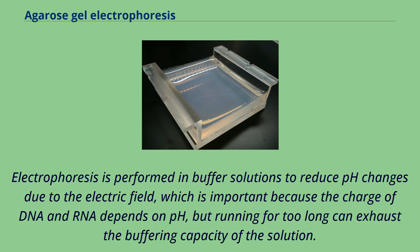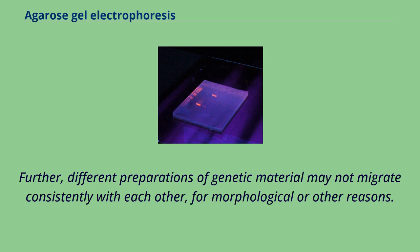Furthermore, different preparations of genetic material may not migrate consistently with each other for morphological or other reasons. In the mid to late 1960s, agarose and related gels were first found to be effective matrices for DNA and RNA electrophoresis.